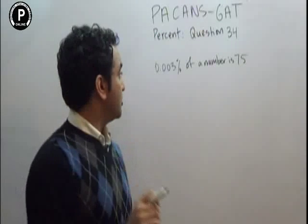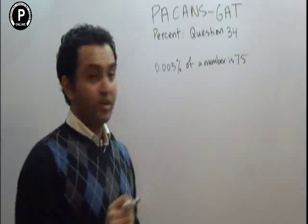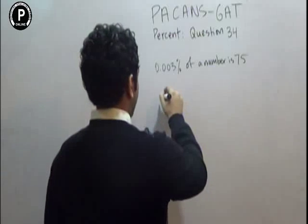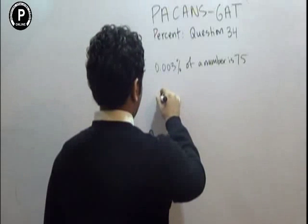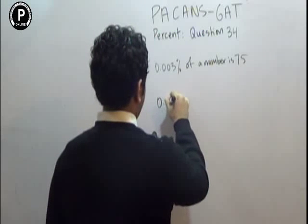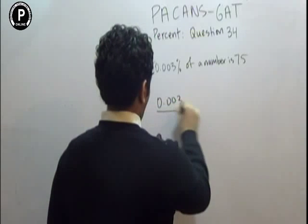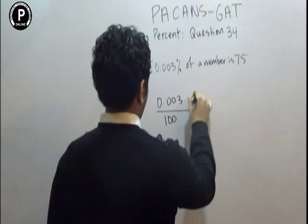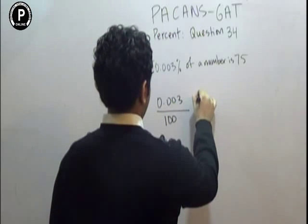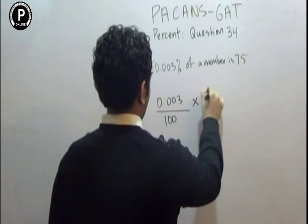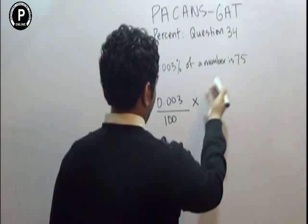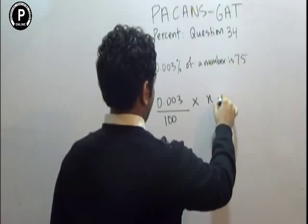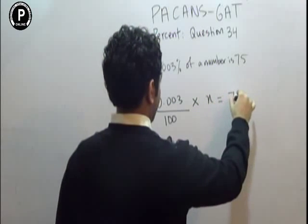0.003% of a number is 75. So it is going to be 0.003 over 100 times of a number. Of a number means we don't know the number. It is going to be x is equal to 75.